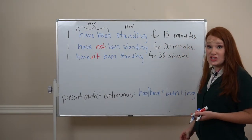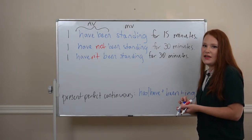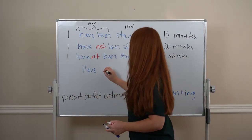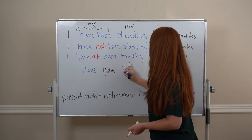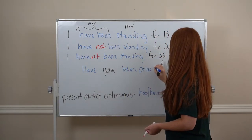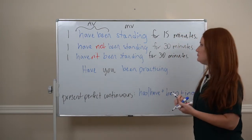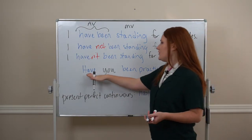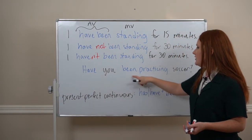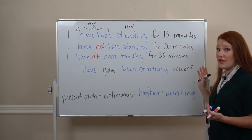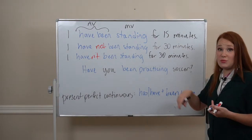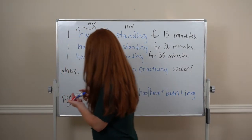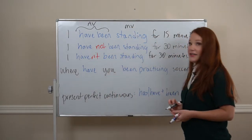To make a question, the word order is the same as always. I could ask: Have you been practicing soccer? We've got that first auxiliary verb 'have,' then the subject, the rest of the verb, and our object or other information. And if we want an info question, we put the question word at the beginning: Where have you been practicing soccer?